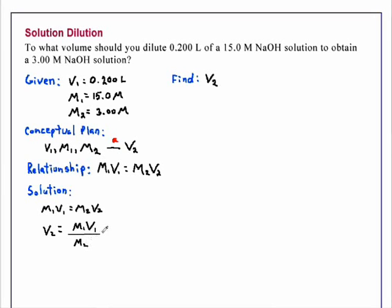So now we will substitute. Our initial molarity is 15.0 molar and we are going to multiply that by our initial volume, 0.200 liter. And we will divide this by the final molarity, which is 3.00 molar.